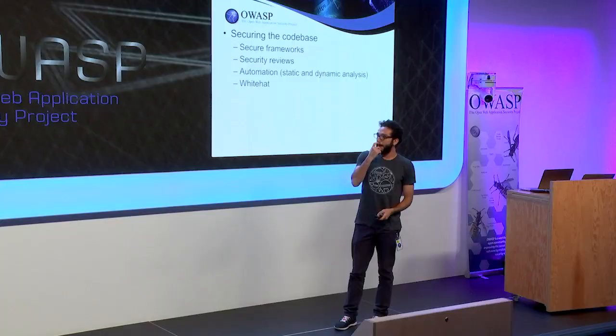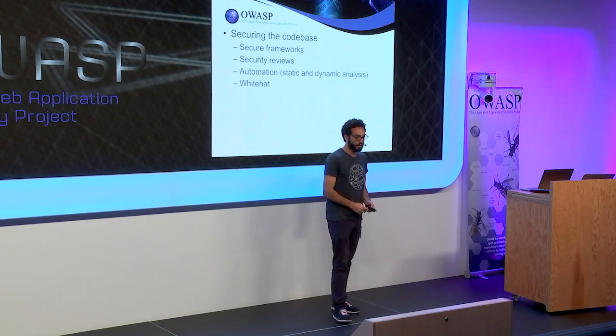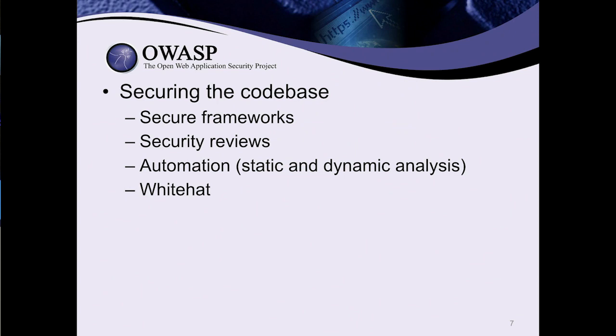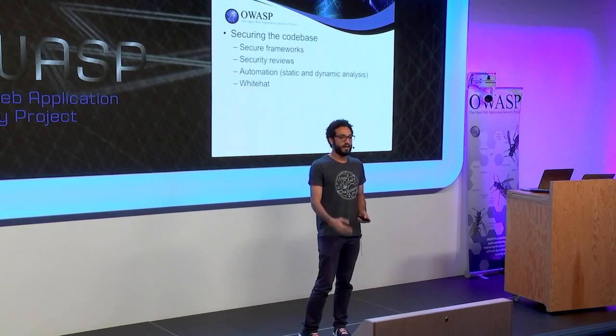So how do we secure the code base at Facebook? We have four pillars we try to focus on: secure frameworks, security reviews, automation, and white hat. I'll speak about each briefly — the limitations, pros and cons — and then we'll deep dive into how static analysis and automation help us secure the company.